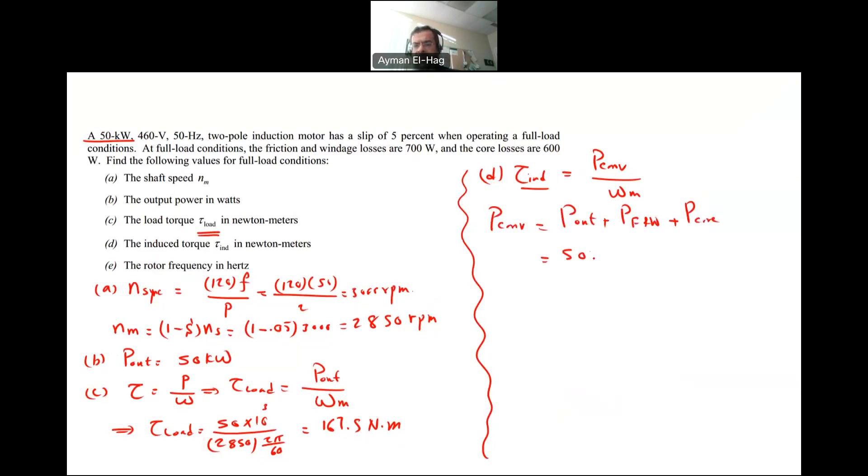I want to find what is the P convert, which is equal to the P out plus the P friction and windage losses plus the P core losses. This is 50 kilowatt. The friction and windage, it is 0.7. The core is 0.6, so we have total of 51.3 kilowatt.